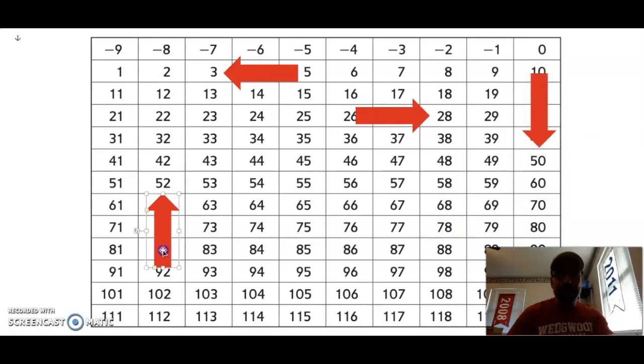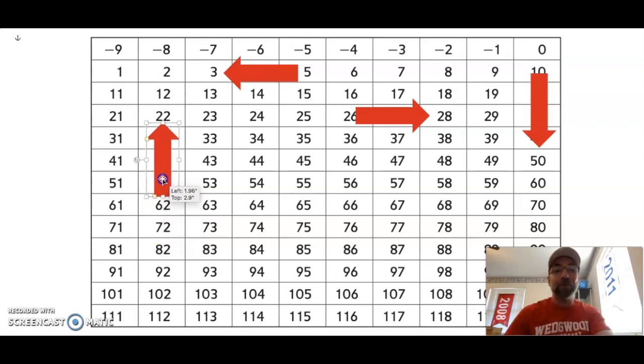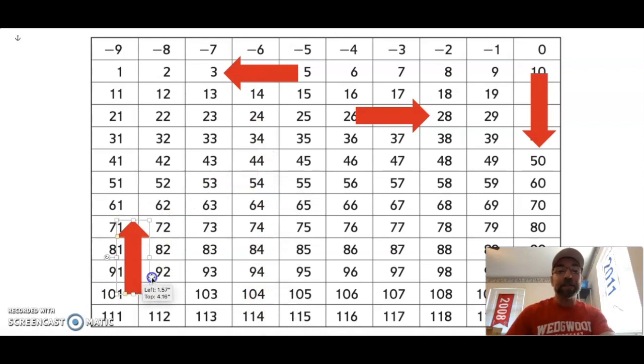And then I have my arrow that points up. Sometimes we say we're going up the elevator or we're climbing the ladder. Well, this time we're subtracting 10. Let's check: 42, 32, 22, 12, and then 2. So when we go up our number grid, we are subtracting 10 each time. Awesome job.